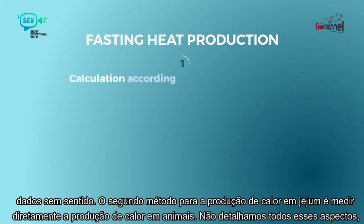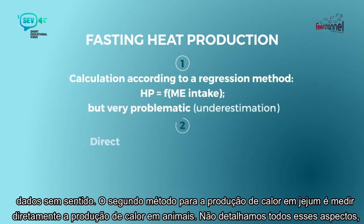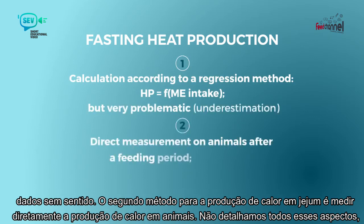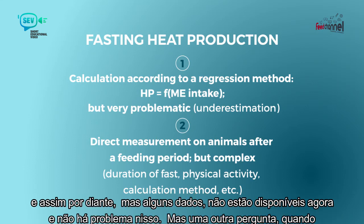The second method for fasting heat production is to measure it directly on animals. We don't detail all these aspects, but it should be done very carefully, taking into account the duration of the fast, the physical activity of the animals, and the different calculation methods. Some data are available now and there is no problem for that.